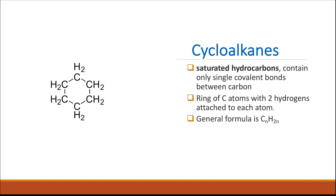Cycloalkanes are considered functional group isomers of alkenes because they have the same general formula as alkenes, but they have a different functional group — the functional group of alkenes is the double bond.